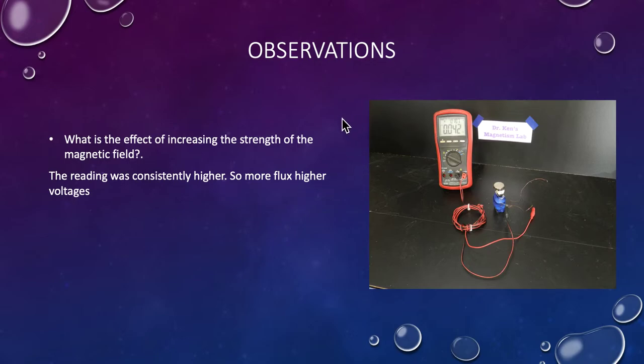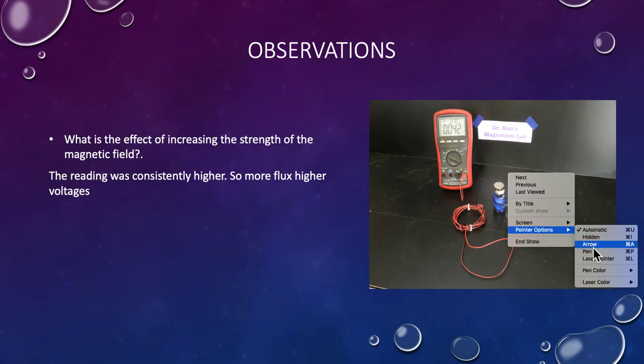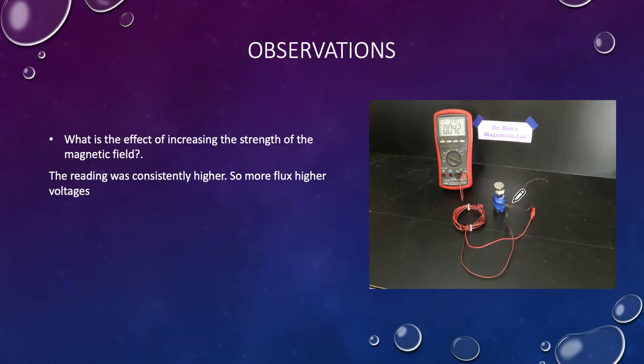So what are our observations? The first question we need to ask: what is the effect of increasing the strength of the magnetic field? So the reading was considerably higher - more flux, higher voltage. So more flux, higher density, we get more voltage. With our increased magnet I didn't get a lot of increase but got a little bit of increase with our button magnet, and increased our voltage up to about 42 instead of in the 20s.